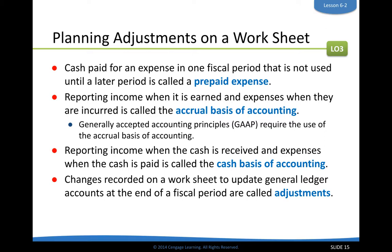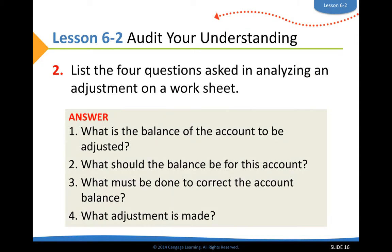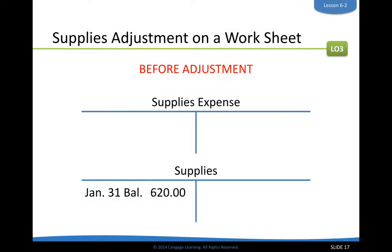When you need to expense an asset like supplies, you need to move it into an expense account and make an adjustment at the end of the fiscal period for whatever was used up. There are four questions to ask yourself when making an adjustment on a worksheet: What is the balance of the account to be adjusted? What should the balance be? What must be done to correct the amount? And what is the final adjustment date?